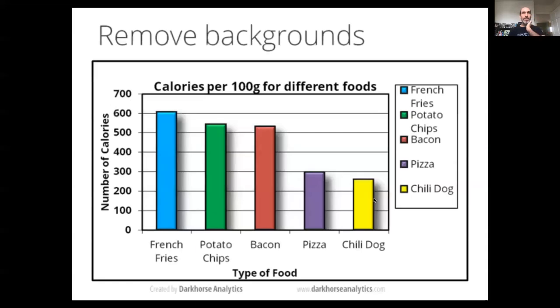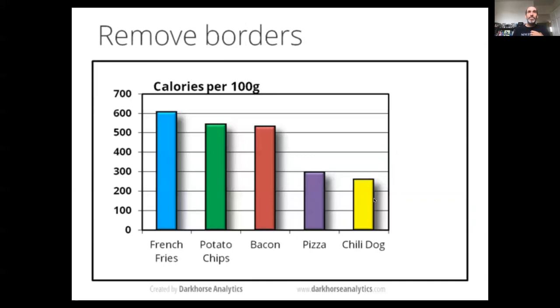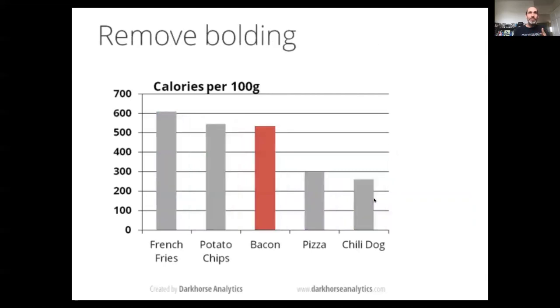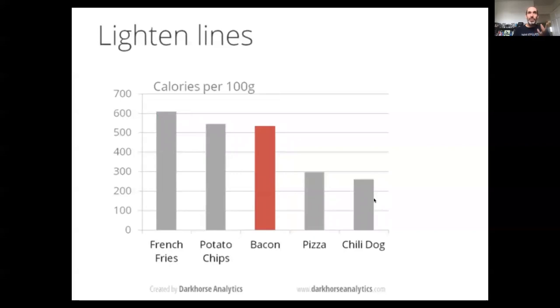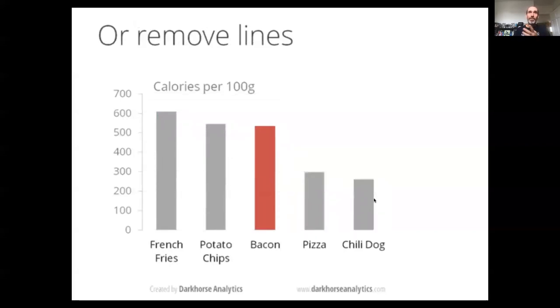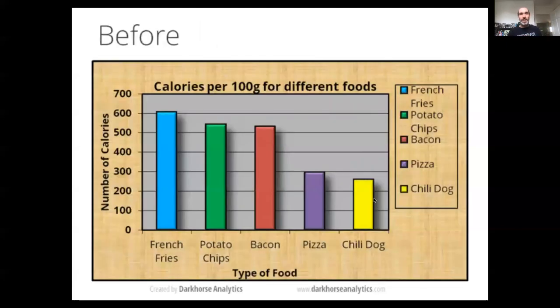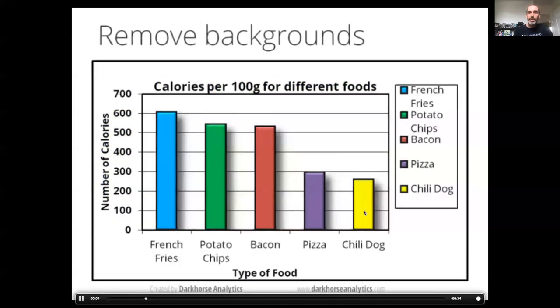So here we're dropping backgrounds, dropping redundant labels, removing unnecessary borders, reducing our colors to focus on the group we're interested in, removing special effects, removing unnecessary bolding, lightening on labels that aren't really the key thing to focus on, lightening lines or just dropping them completely if they're not the things that we need to focus on. Here showing an example of directly labeling the bars we're interested in rather than relying on axis labels. And we end up with a figure that in the end is much more effective.